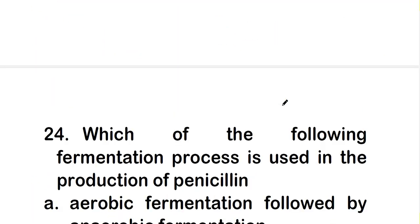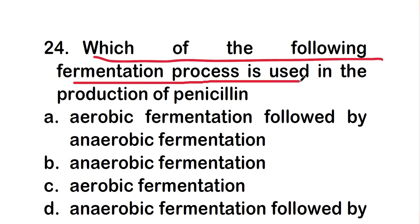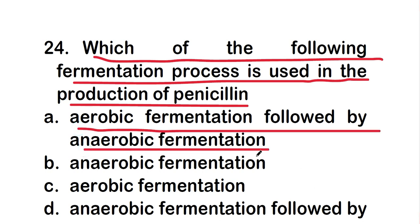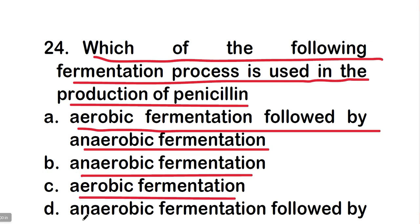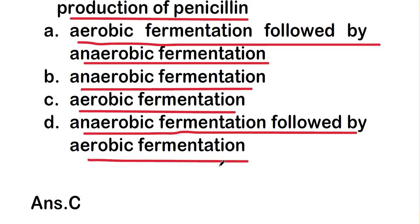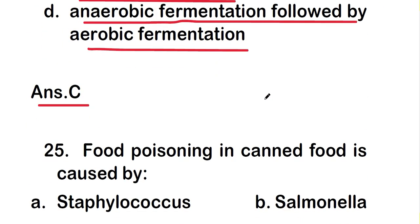Next question: which of the following fermentation process is used in the production of penicillin? Options are aerobic fermentation followed by anaerobic fermentation, anaerobic fermentation, aerobic fermentation, or anaerobic fermentation followed by aerobic fermentation. The right answer is option C — aerobic fermentation is used in the production of penicillin.